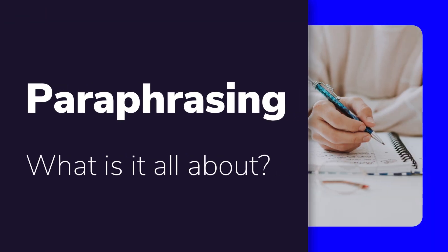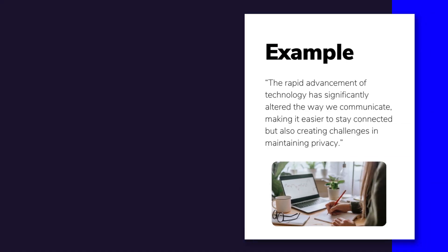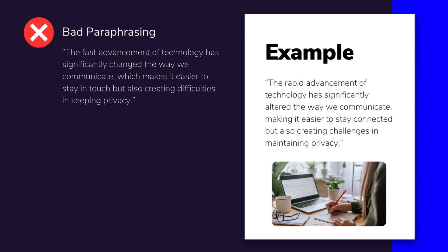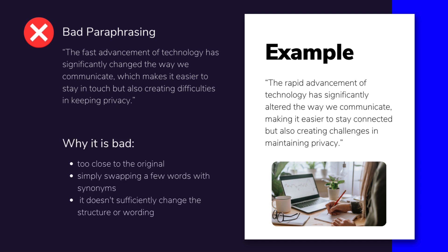Let's illustrate what paraphrasing is all about by looking at a good and a bad example. The original sentence says: 'The rapid advancement of technology has significantly altered the way we communicate, making it easier to stay connected, but also creating challenges in maintaining privacy.' Here's a paraphrased version: 'The fast development of technology has changed the way we communicate a lot, making it simpler to stay in touch, but also causing problems with keeping privacy.' This paraphrase is not quite right — it's too close to the original, only swapping a few words with synonyms without really changing the structure or phrasing. This is not useful when trying to demonstrate your vocabulary range and ability to write in your own words.